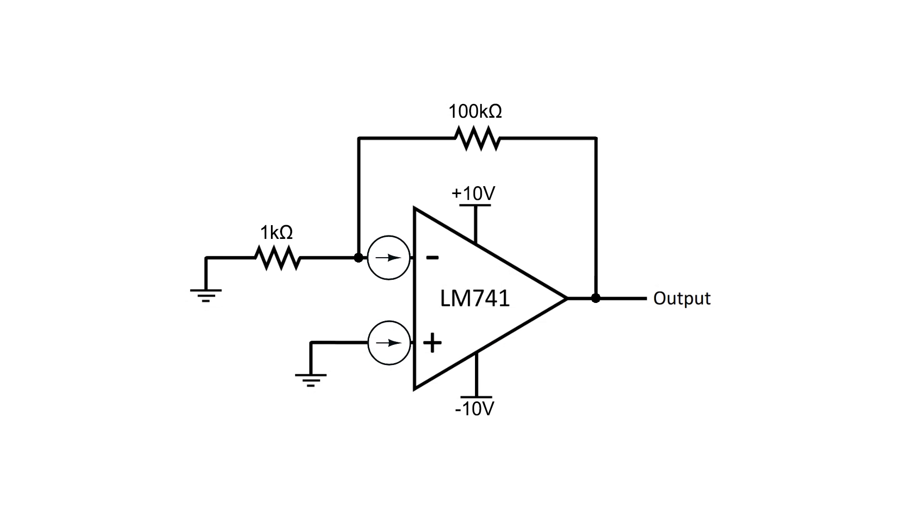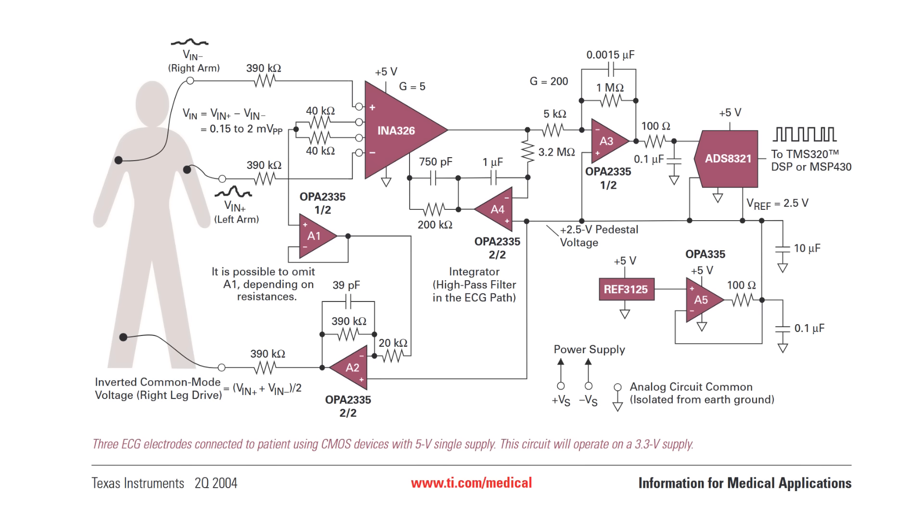Also, similar to how the input offset voltage is a non-ideality, there's also another non-ideality called input offset current, or bias currents. I'm not going to go into detail on that in this video, but I will say that this does become significant when working with low powered circuits, or circuits that have to amplify tiny signals like in electrocardiographs or electromyography.